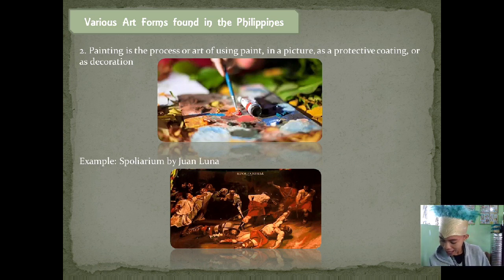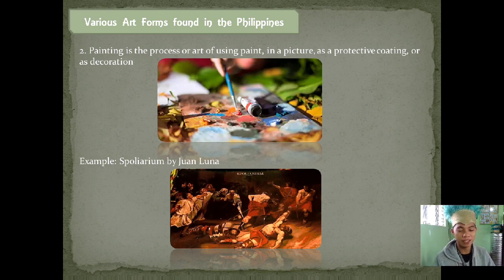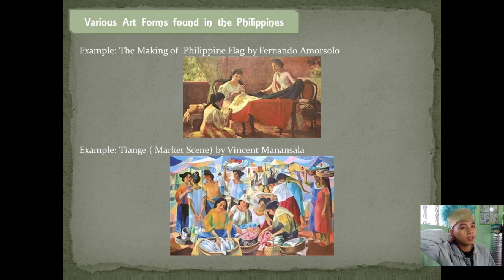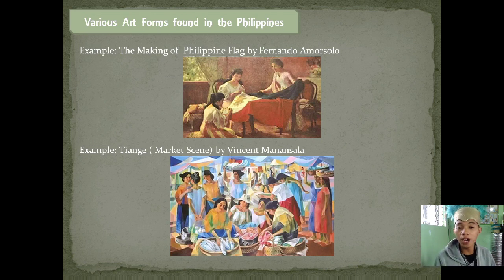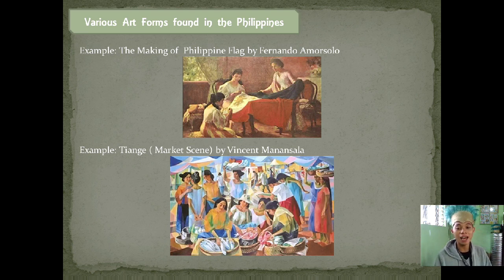The Spolarium painting reflects the situation of Filipinos during the Spanish regime. It was created during the Spanish period. Another example is the Making of the Philippine Flag by Fernando Amorsolo, which was during the American regime. Next is the Tiangge or Market Scene by Vicente Manansala. These are notable examples of paintings found in our country.